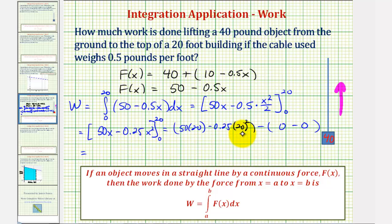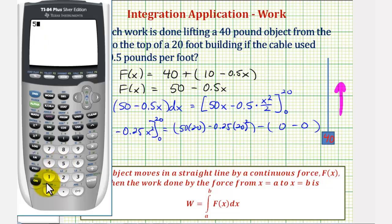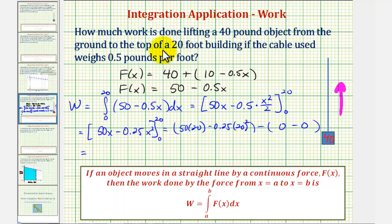And now we'll go to the calculator to determine this value. We'd have 50 times 20 minus 0.25 times 20 squared, which is equal to 900. And therefore, the work done would be 900 foot-pounds.